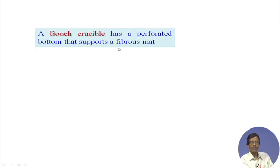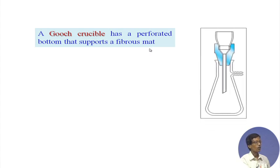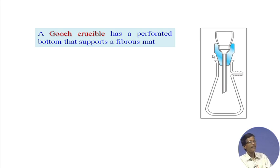The Gooch crucible has a perforated bottom supported on a fibrous mat, which is a porous mat that passes the corresponding liquid. We all have some idea about the process of using a funnel and filter paper. We will recall how to fold the filter paper and how to place it in the funnel, because it has a relationship with the filtration of ferric hydroxide.